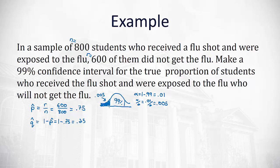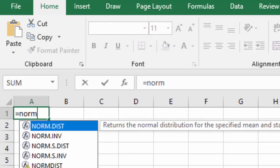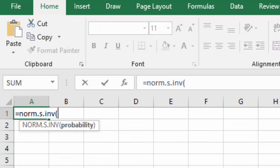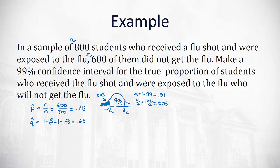So let's go to Excel to figure out what our z sub c, our z critical value, is going to be. All we have to do is type in equals norm.s.inverse, the probability of 0.005. And when we hit enter, we find the value is negative 2.576. So the positive value then is 2.576. We now have our critical value.